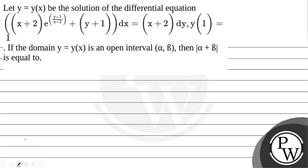Hello everyone. Let us read this question. The question says: let y = y(x) be the solution of the differential equation x plus 2 times e to the power (y+1)/(x+2) plus y plus 1 dx equals x plus 2 dy, with y(1) equal to 1. If the domain of y = y(x) is an open interval (alpha, beta), then modulus of alpha plus beta is equal to?